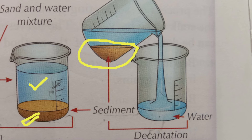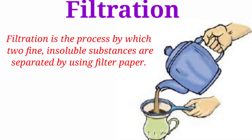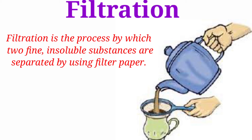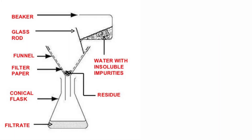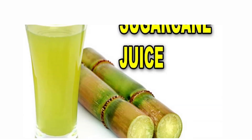The next process is filtration. In filtration, we use a filter to remove insoluble solid substances from liquid. For example, we use a strainer for filtering tea. In this process, the insoluble solid particles are retained in the filter and the liquid passes through it. The liquid obtained after filtration is called the filtrate. In laboratories, we use filter paper for filtration.